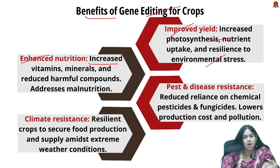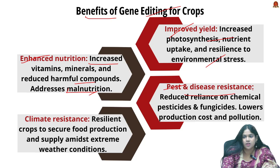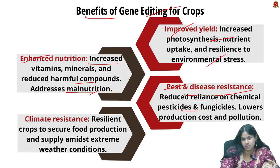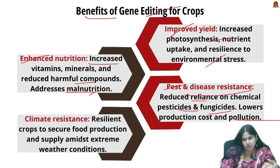Next is enhanced nutrition — this includes increasing the levels of vitamins, minerals, and other essential nutrients, as well as reducing harmful compounds. This can help address malnutrition and nutrition deficiencies, particularly in developing countries. Next is pest and disease resistance — gene editing can create crops that are more resistant to pests and diseases, reducing the need for chemical pesticides and fungicides.